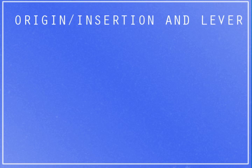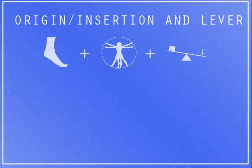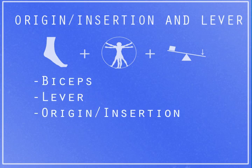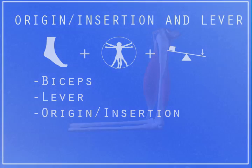The human body is amazing in the way that it blends functional anatomy, physiology, and physics together to produce human movement. We can better understand how movement occurs by defining some key terms and looking at the muscles and joints of the arm as they function.